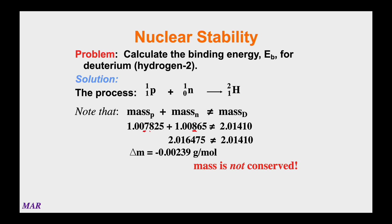The mass is not conserved. You're actually losing mass going from a proton and a neutron to the deuterium. You have a negative delta m. Remember delta is always final minus initial, so final 2.01410 minus initial 2.016475, you get this negative number. You might be thinking, Russell, you made me go through all those balancing chemical reaction things back in Chem 221. It is important. There's something else going on here.